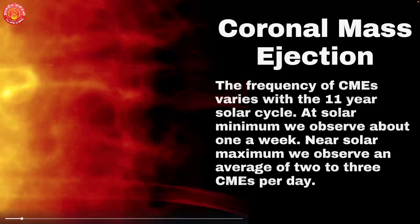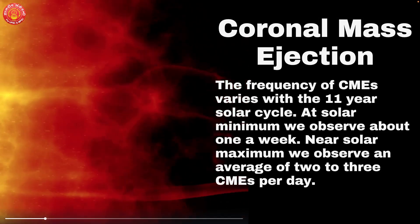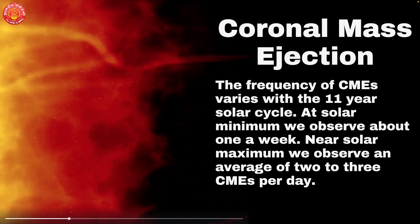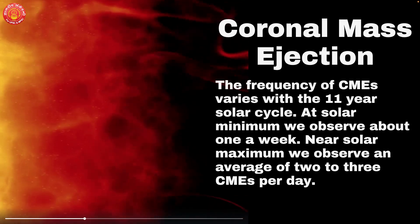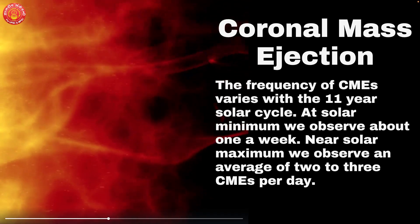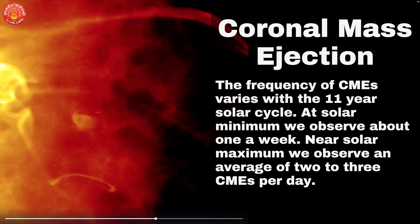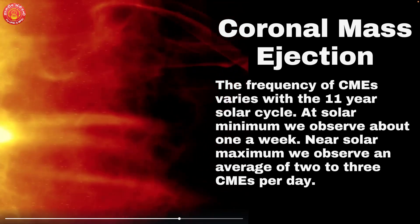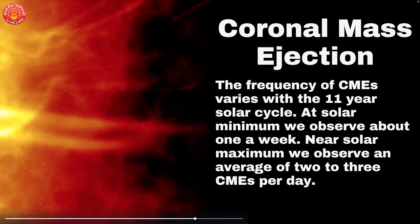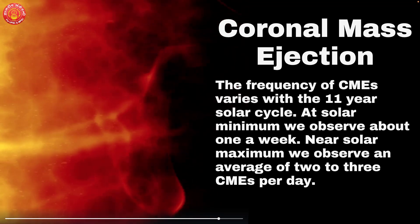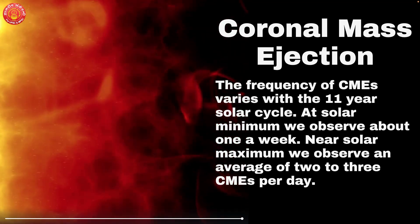When it comes to CMEs, the frequency varies with the solar cycle. The solar cycle is an 11-year cycle with a solar minimum and solar maximum. At solar minimum, there would be less intense heat from the sun, while at maximum there would be a lot of heat radiated towards various planets. At solar minimum, we observe about one coronal mass ejection per week, and at solar maximum we observe on average 2–3 coronal mass ejections per day.